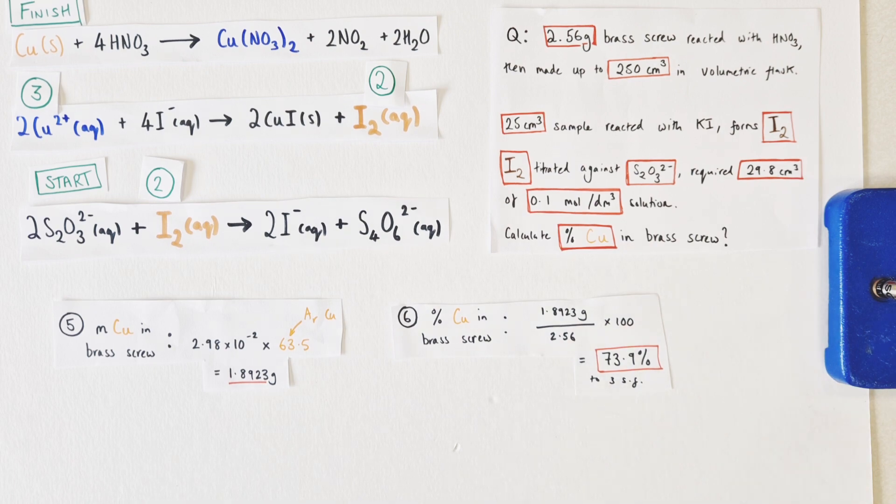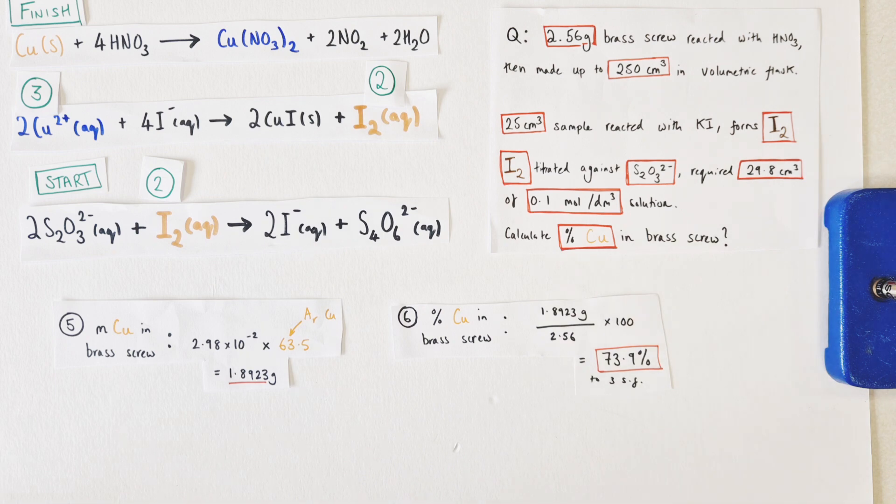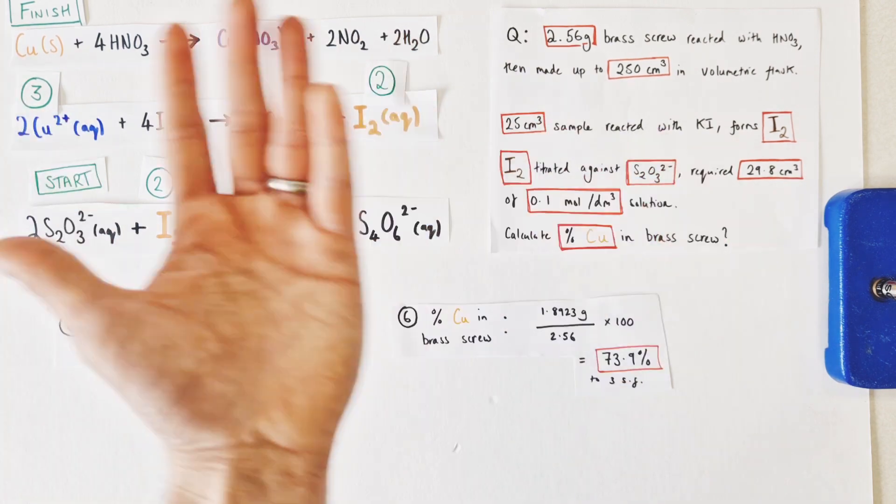Hopefully you can see how to work your way back through a back titration to solve a redox titration, in this case particularly analyzing the composition of a brass screw and including the practical method as well. It's a pretty comprehensive video taking you through the entire process, I hope it was really useful and helps you solve more challenging redox titrations in the future. And as always, thank you for listening, take care, bye for now.